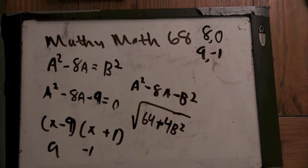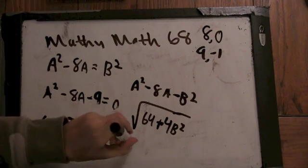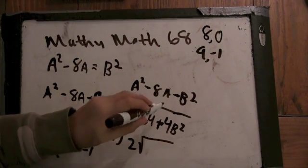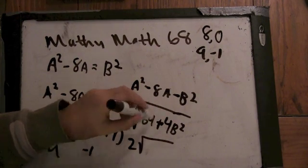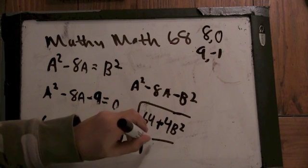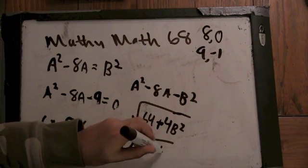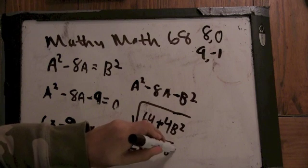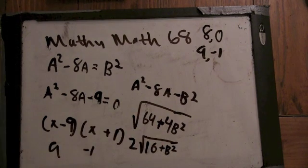Can you simplify it here? Well, I can say this is 2 times the square root of, so take a 4 out of that, it's 16 plus b squared. Okay. Good. Now we're cooking with butter.